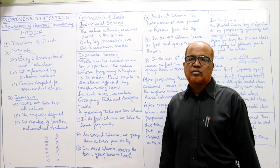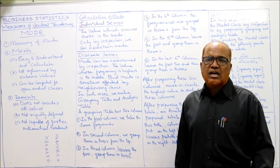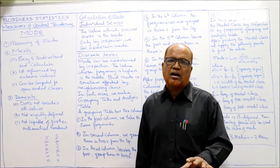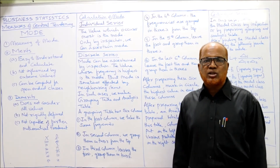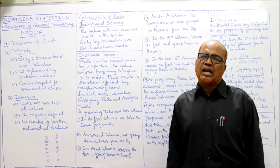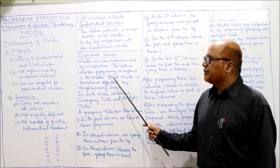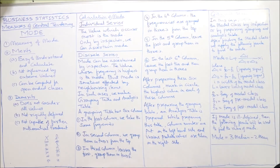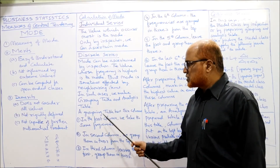However, sometimes the mode is affected by neighboring items, so it is not always reliable to find mode by inspection alone. There is an alternative method which is 100% correct: by making a grouping and analysis table we can ascertain the correct mode.